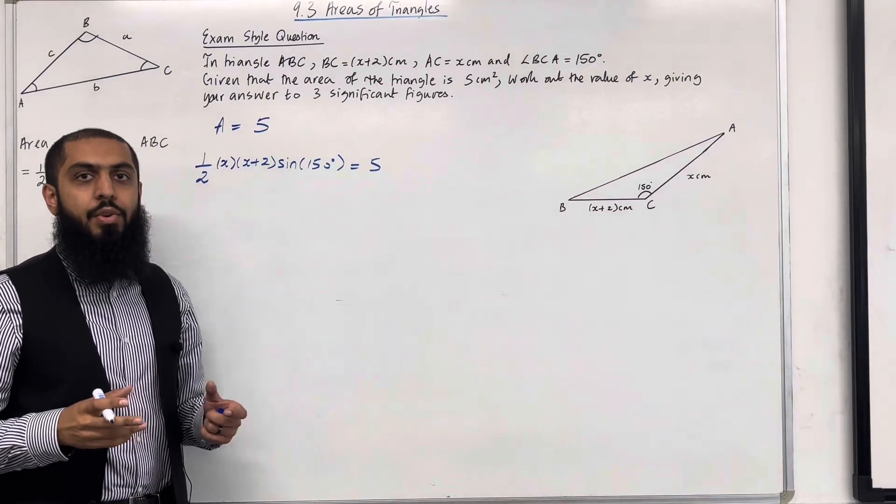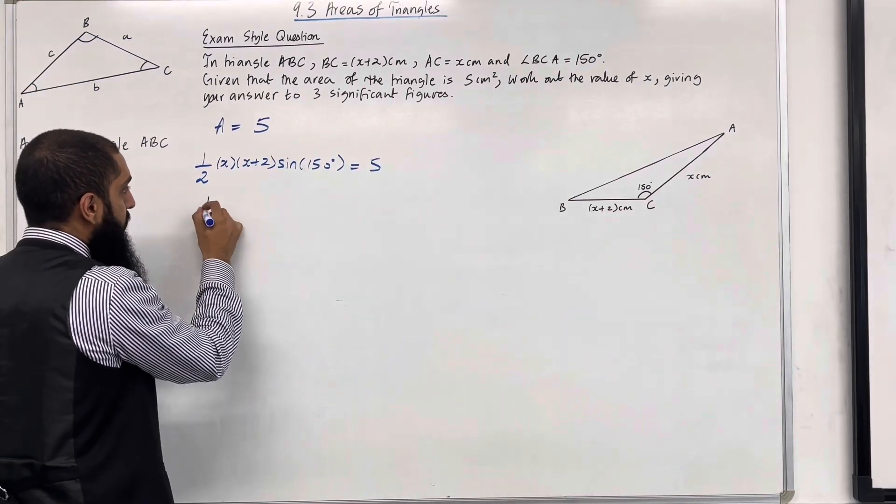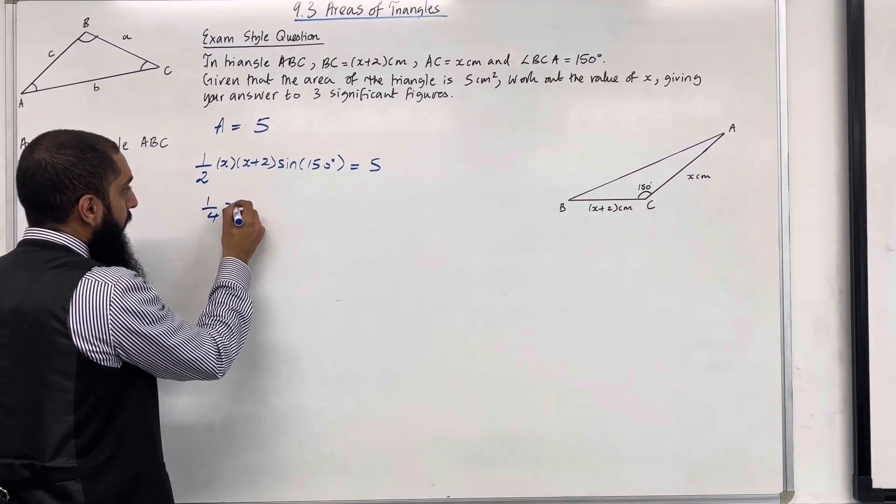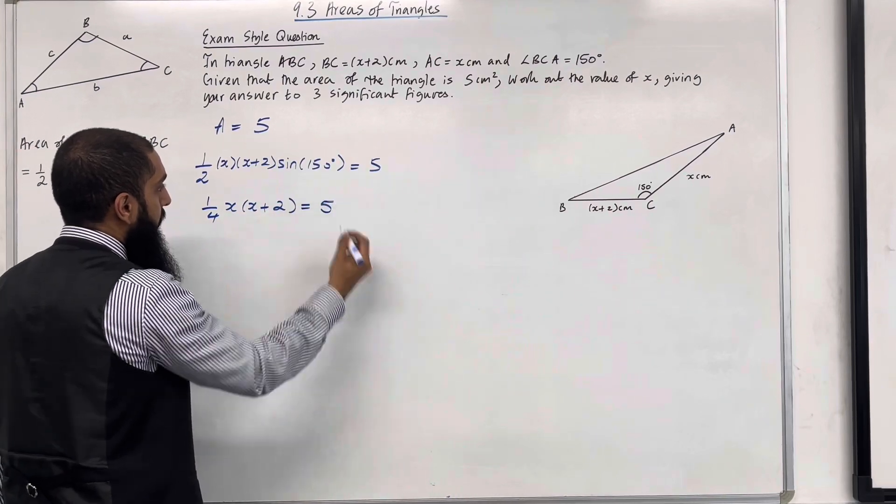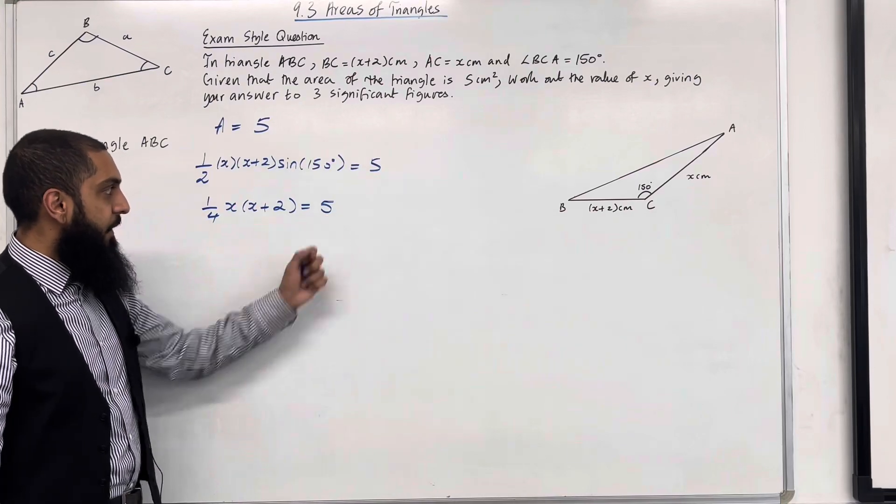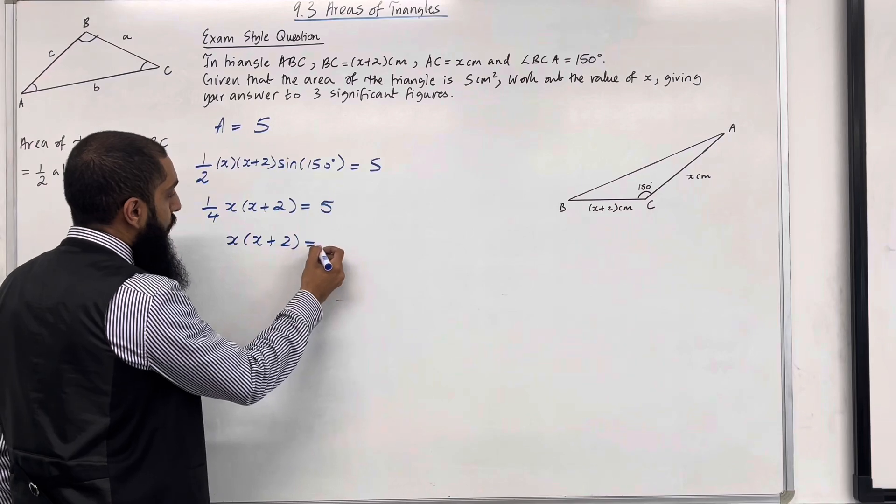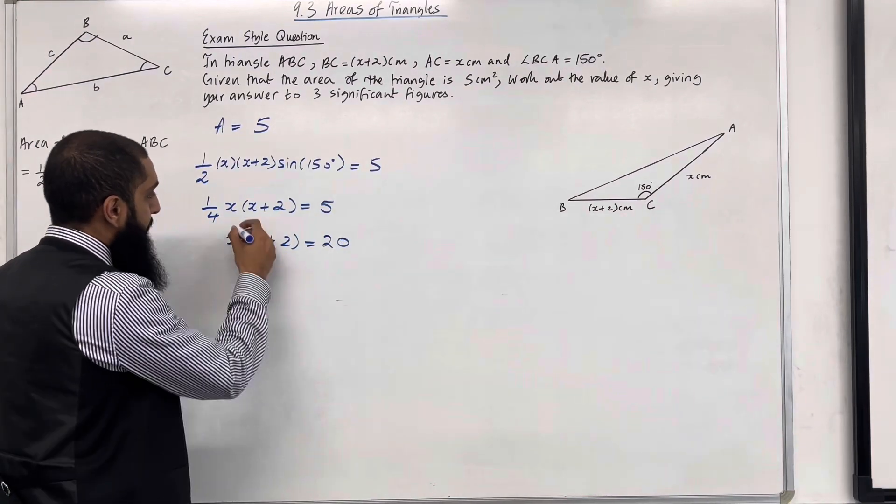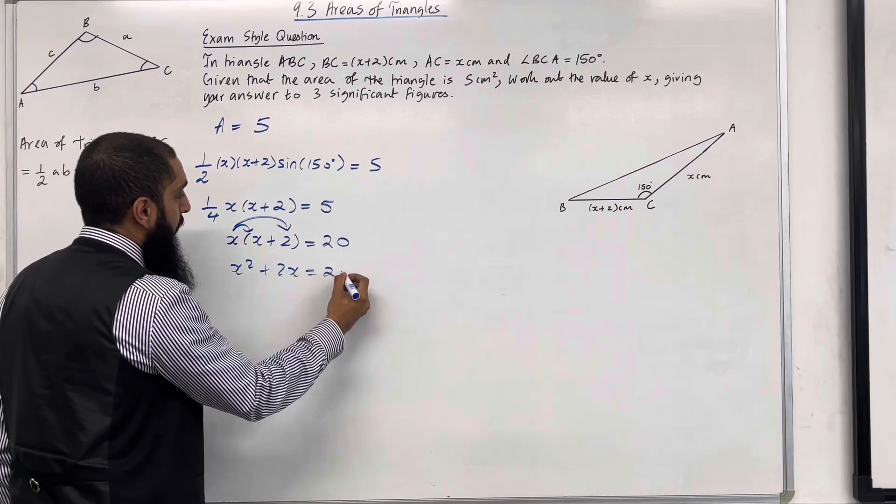Now sine 150 degrees is a half. A half multiplied by a half is just a quarter. So we have a quarter x multiplied by x plus 2 is equal to 5. Now we can take the 4 and we can multiply it by the 5. So we have x in bracket x plus 2 is equal to 20. Expand the brackets. This gives us x squared plus 2x equal to 20.